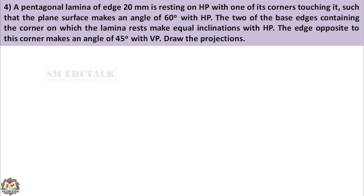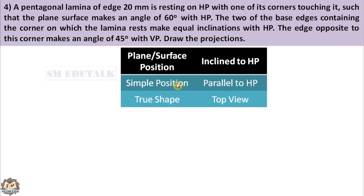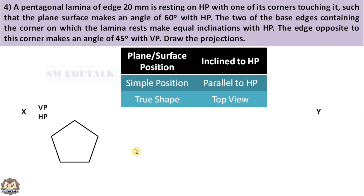In stage 1, we have to draw the simple position of the lamina. In stage 2, the surface of the lamina should be inclined to the specified reference plane. The plane surface makes an angle of 60 degrees with HP — that is, inclination is given to HP. Refer this table to find the simple position and true shape position. For the inclined to HP condition, the simple position is parallel to HP and the true shape is obtained in the top view. So you have to draw the top view first, followed by the front view.